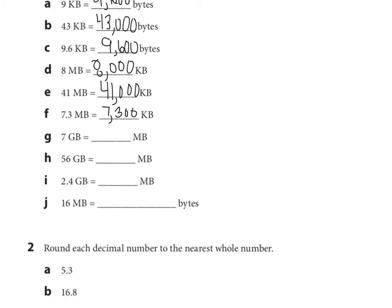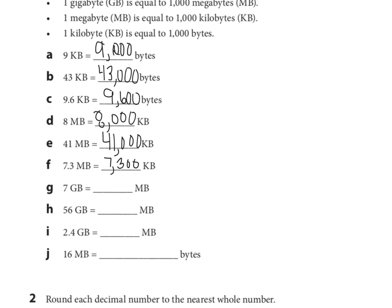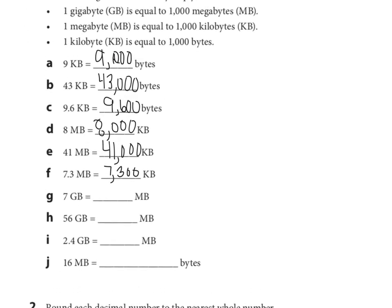Looking at G, 7 gigabytes is how many megabytes? Now we're moving from gigabytes to megabytes. Look up here — 1 gigabyte is 1,000 megabytes. So, 7 gigabytes is how many megabytes? The answer is 7,000.